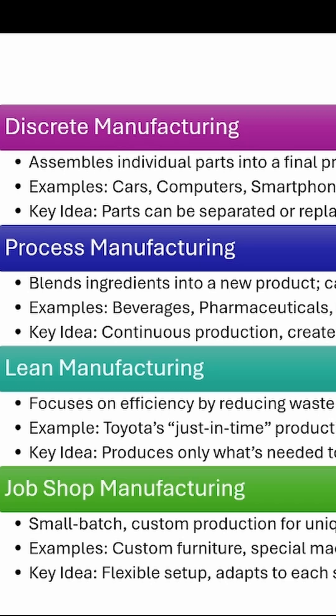One of the best examples of lean manufacturing is Toyota. They became famous for lean manufacturing by producing just enough cars to meet demand, saving time, material, and effort.